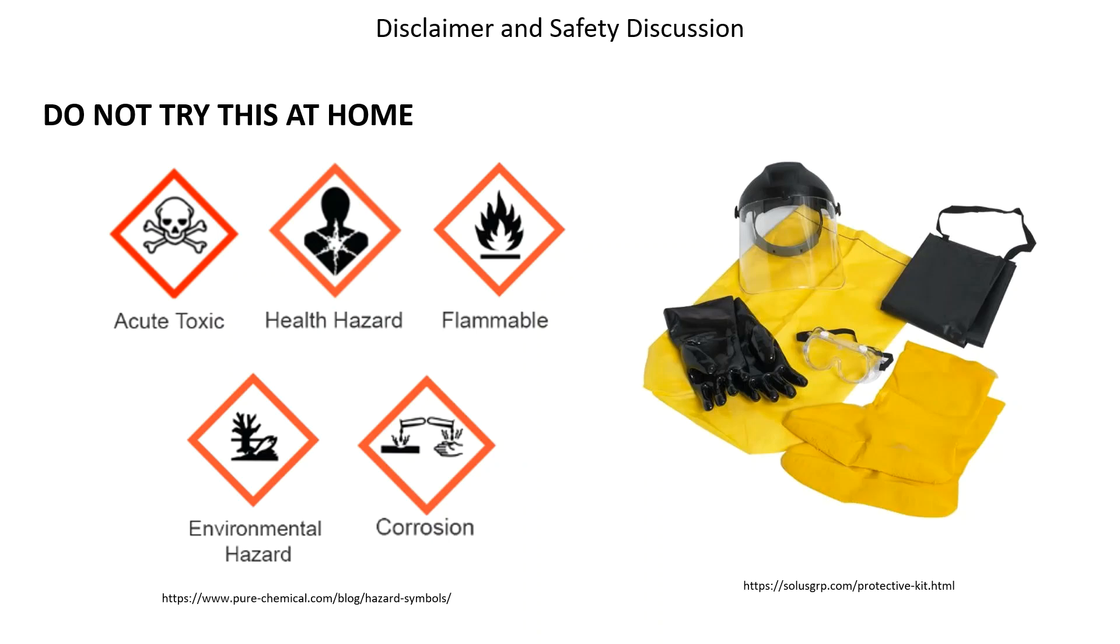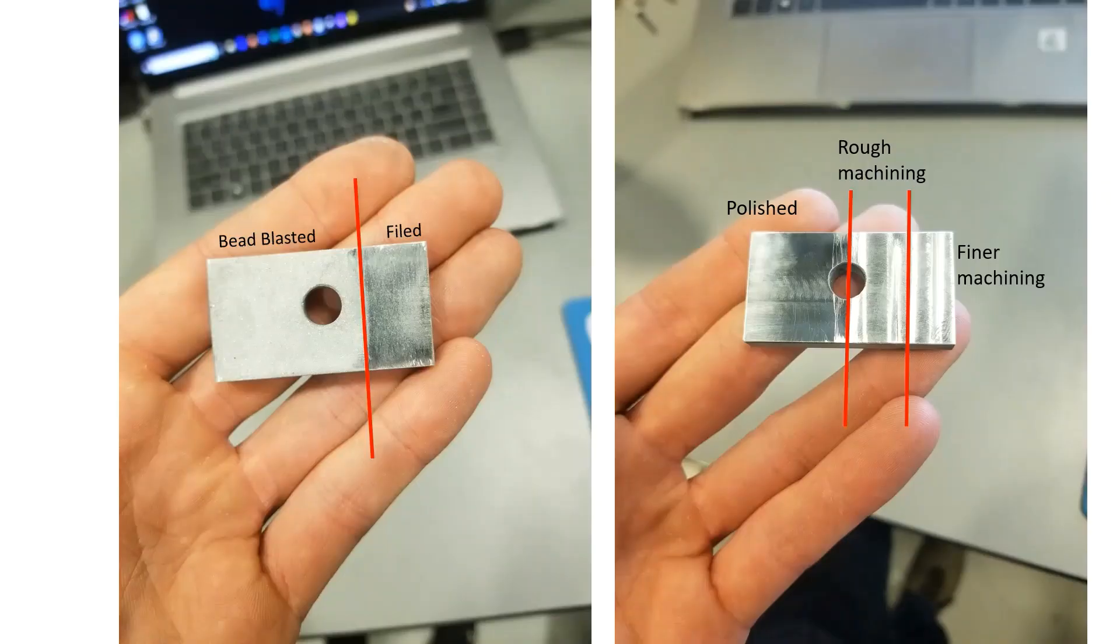This is my practice workpiece that is the same material and similar size and shape to the part I actually want to anodize. This part is 6061-T6 aluminum that I put different surface finishes on to see how that affected anodizing and to get an idea of how I want to prepare my part later on.